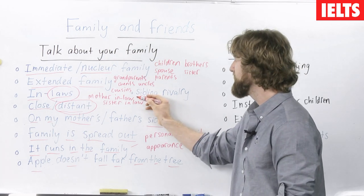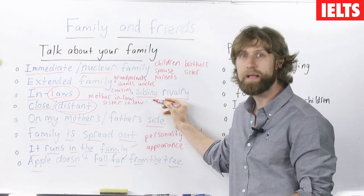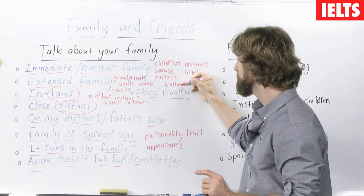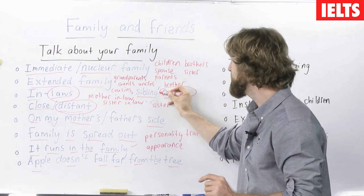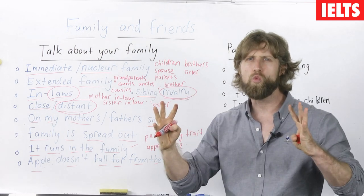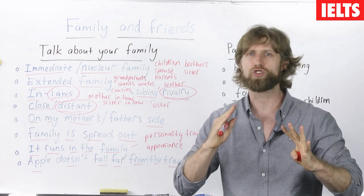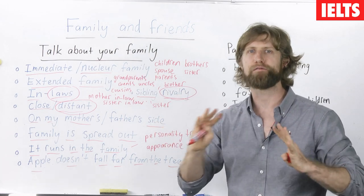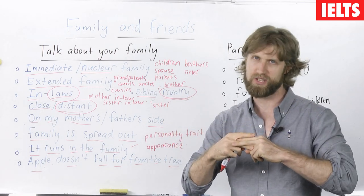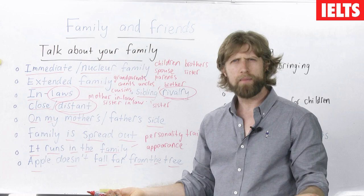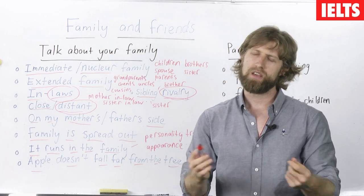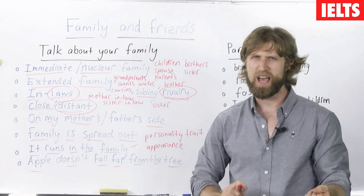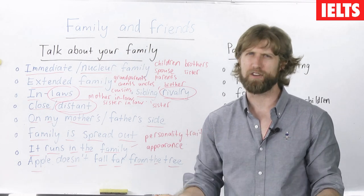One more term is sibling rivalry. A sibling is your brother or your sister. Rivalry means you compete against each other — you have competitions to see who is better. So sibling rivalry means there is a lot of fighting between brothers and sisters. If somebody asks you how you get along with your brother, you can say: well, my brother is my best friend, but growing up there was a lot of sibling rivalry. We had a lot of fights because we're such different people.